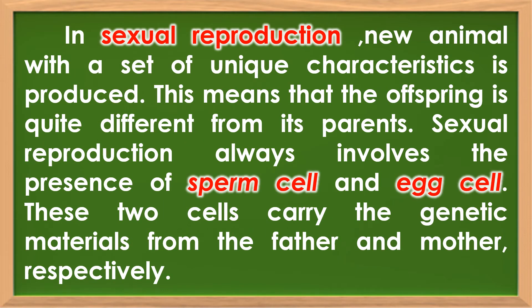In sexual reproduction, a new animal with a set of unique characteristics is produced. This means that the offspring is quite different from its parents. Sexual reproduction always involves the presence of a sperm cell and an egg cell. These two cells carry the genetic materials from the father and mother respectively.